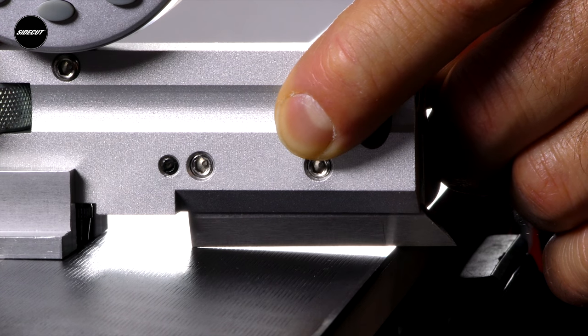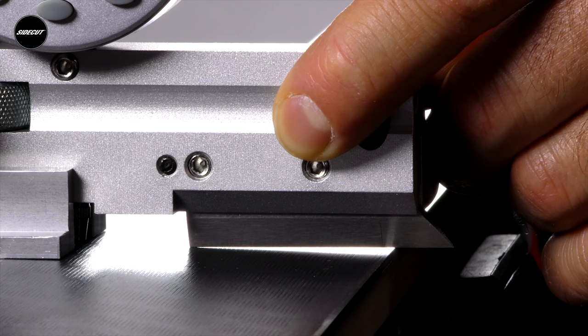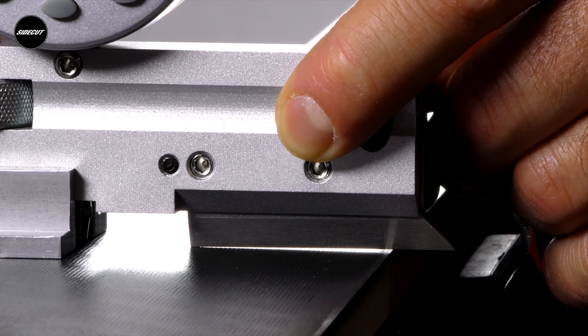Next turn the thumb screw down until almost no light can be seen between your edge and the straight edge on the gauge.